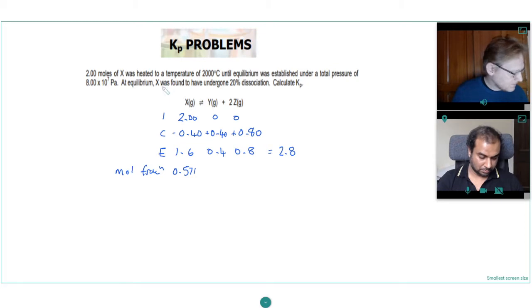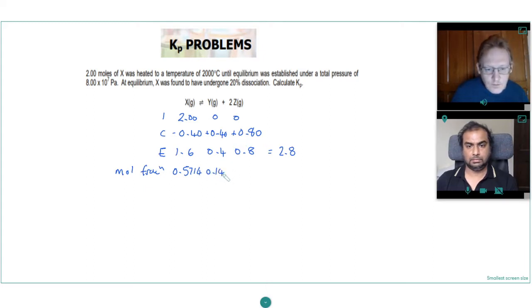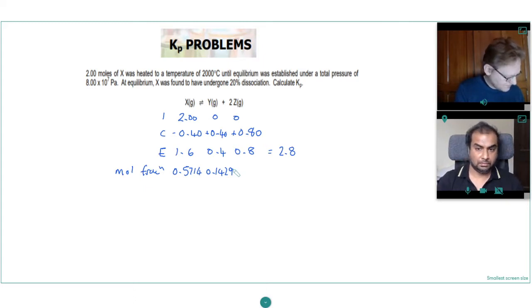We'll go to 4 significant figures: 0.5714. And then we have 0.4 divided by 2.8, which is 0.1429, and 0.8 divided by 2.8, which is 0.2857.